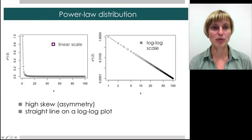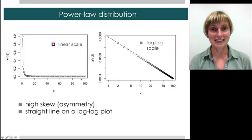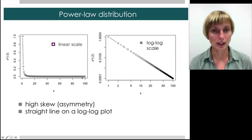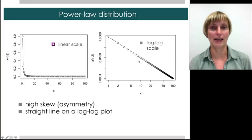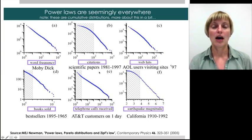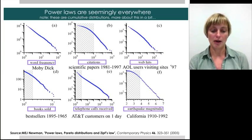We've seen this before. On a linear scale, the power law distribution looks like a very sharp L. And here it is on a log-log scale, where we see a straight line. That straight line is going to be our signature. You see these distributions in many different domains.